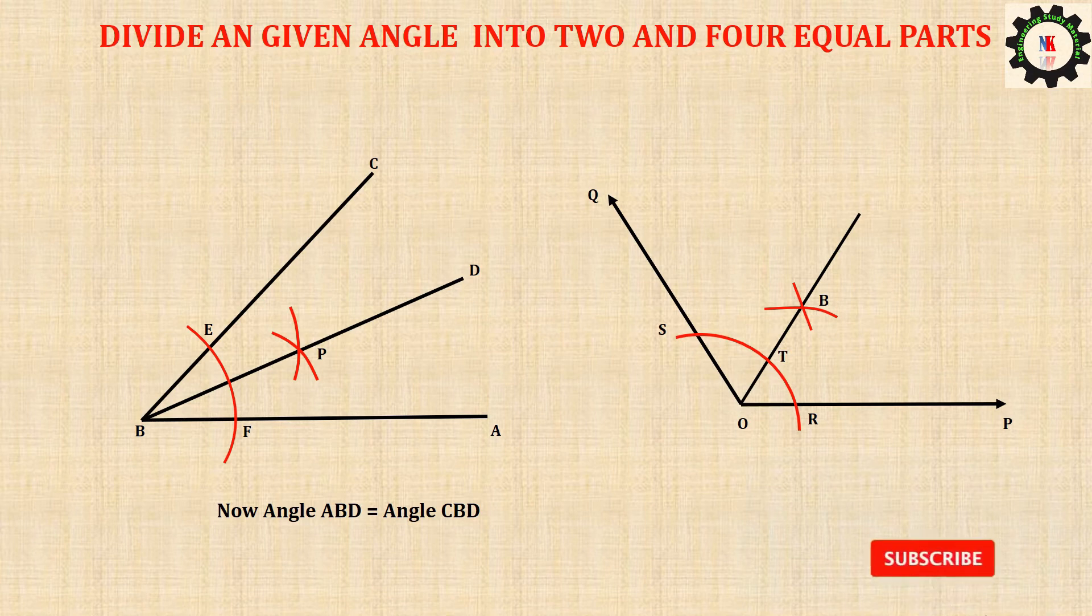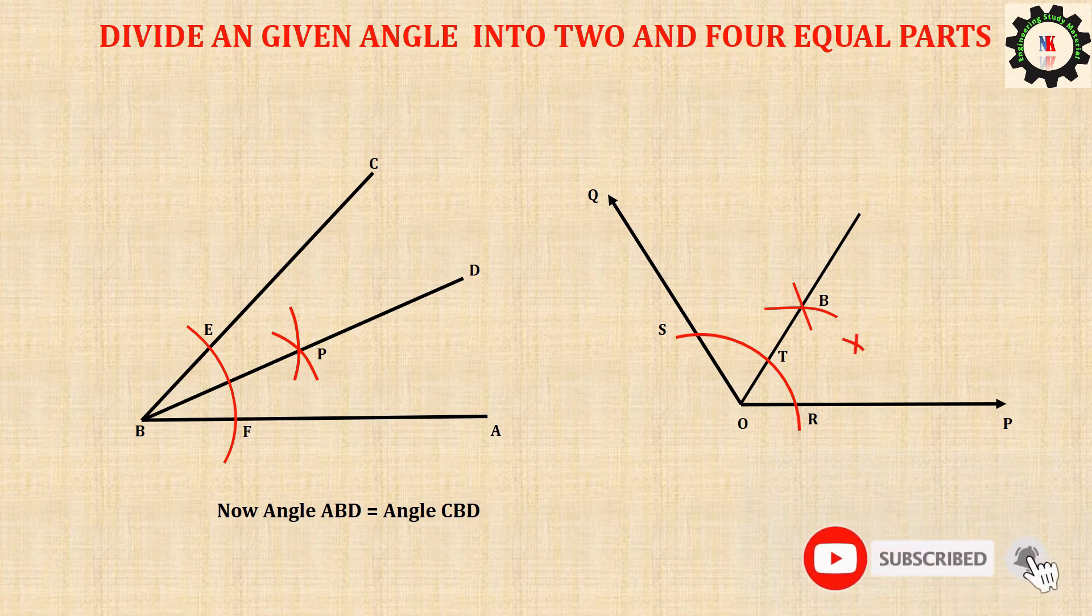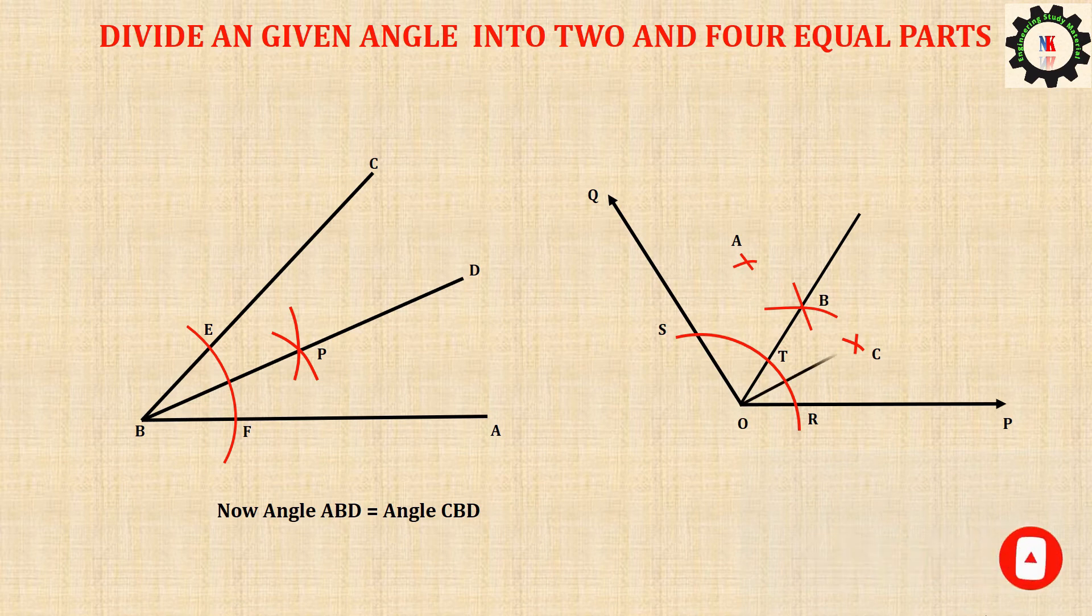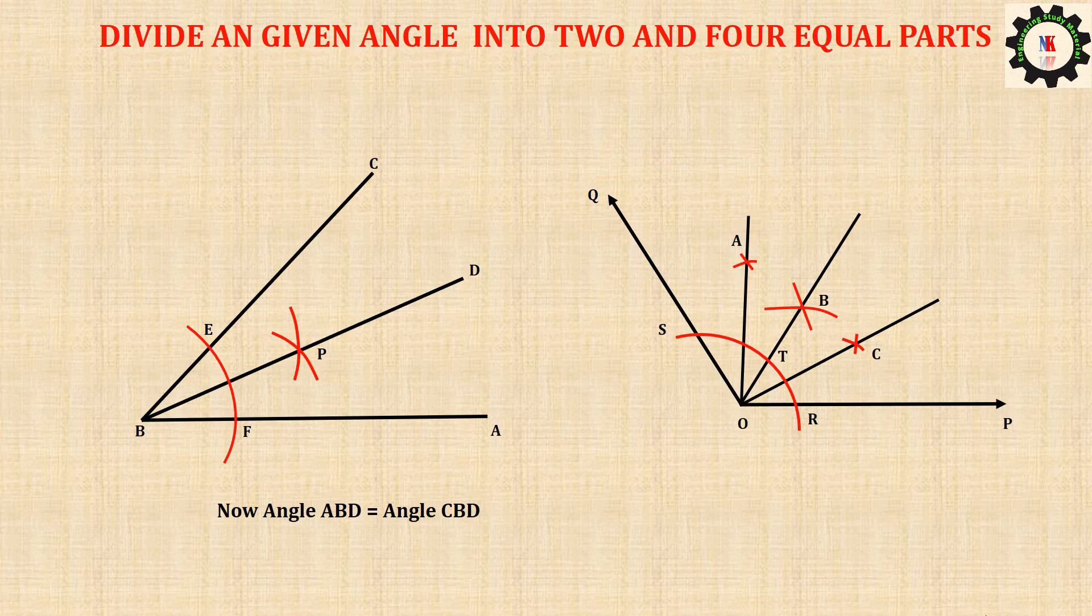With R and T as centers and radius more than half of RT, draw the arcs. Let them intersect at C. With S and T as centers and radius more than half of ST, draw the arcs. Let them intersect at A.